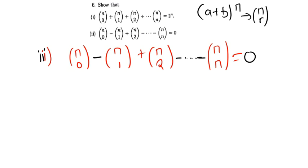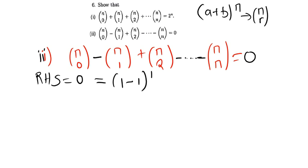Feel free to pause the video and try it out. Here's a hint: when you have zero, think of expressing it as a binomial. Zero can be expressed as (1−1), so our right hand side — which is 0^n — is the same as (1−1)^n. Now bring back the power n.